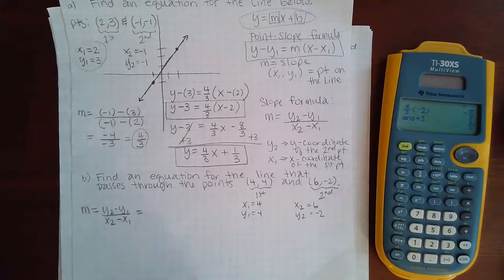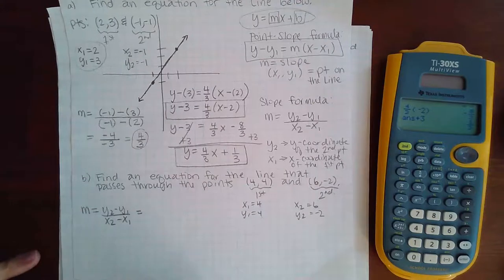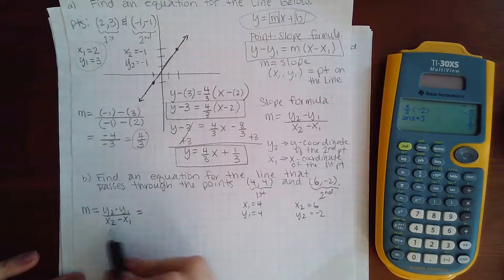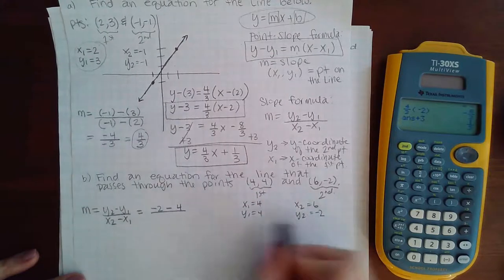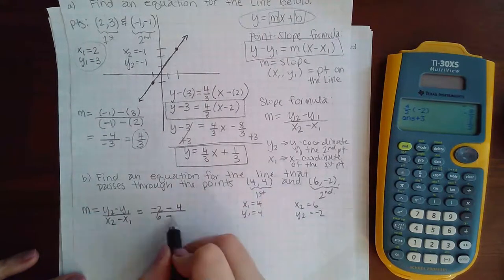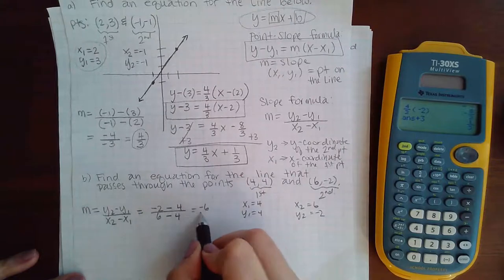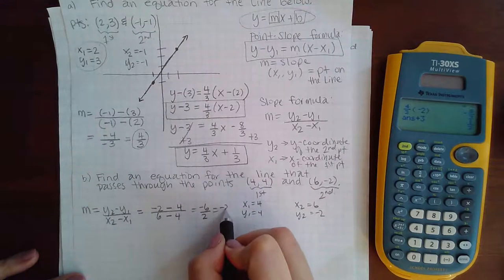Okay, so I'm going to plug in everybody. So I have negative 2 minus 4, and then I have 6 minus 4. So that's negative 6 over 2, or just a negative 3. So that's my slope.